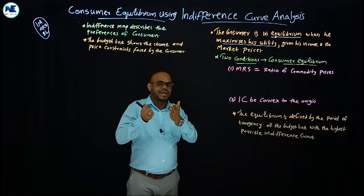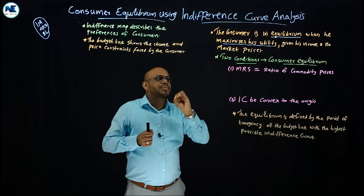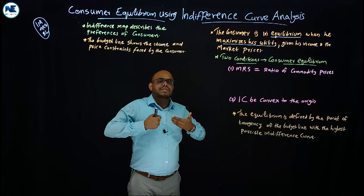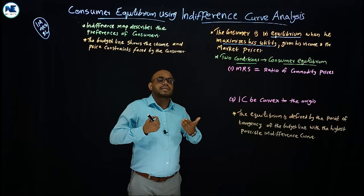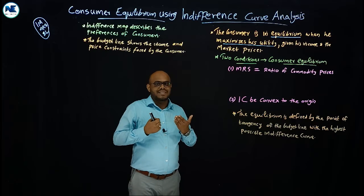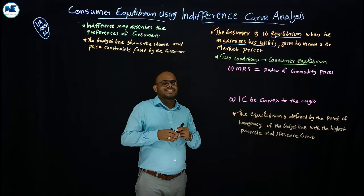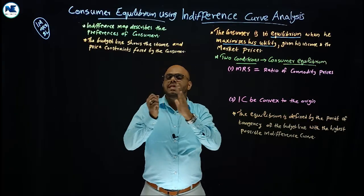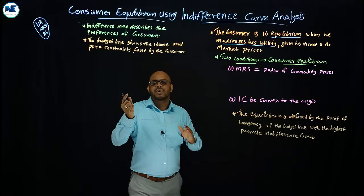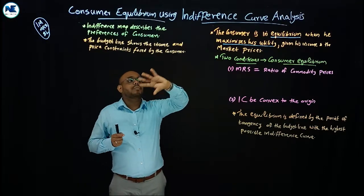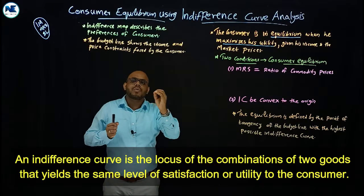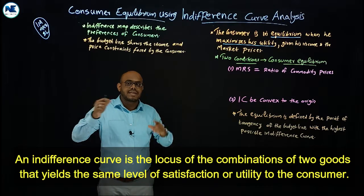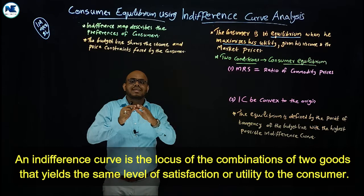Given his budget line and market prices, we want to find the point where the consumer attains maximum utility. We know the meaning of the indifference curve — it is the locus of points of various combinations of two commodities that provides equal utility or satisfaction to the consumer. We have already discussed the indifference curve, the indifference map, and the budget line in detail.